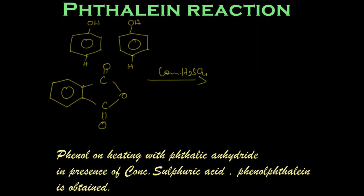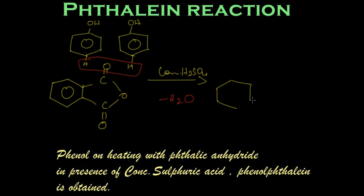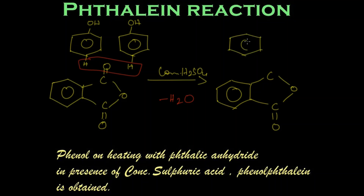Now we are going to react it with concentrated sulfuric acid. What happens is very simple — H₂O will be eliminated and removed as water. Now it's going to unite together. The oxygen is removed as water, and here we have C double bond O, and this O, with two molecules of phenols on top. The hydrogens in the para positions are removed, so the bond gets attached to this carbon.